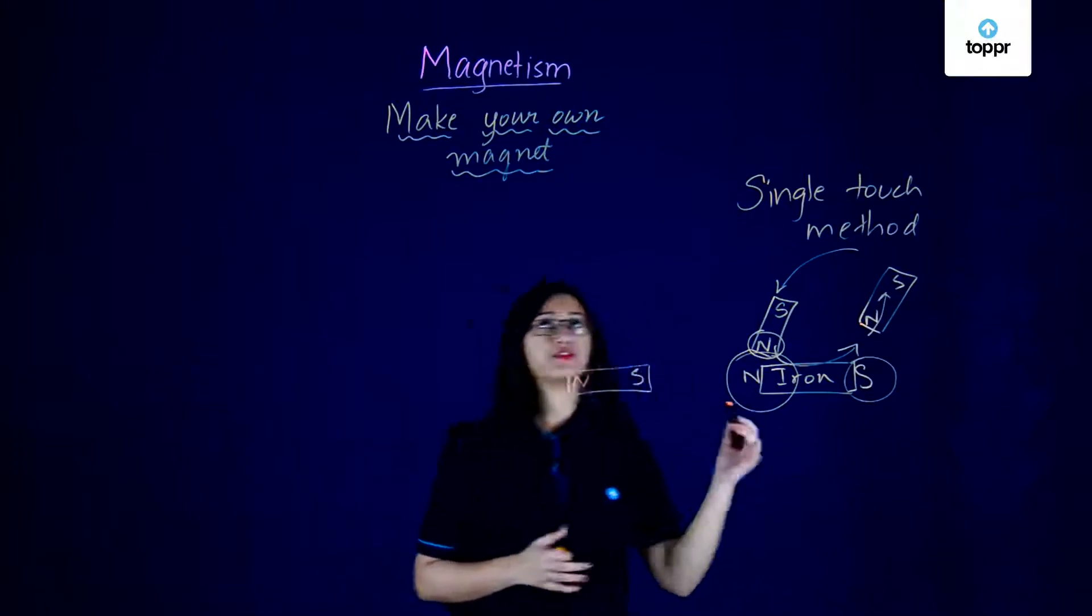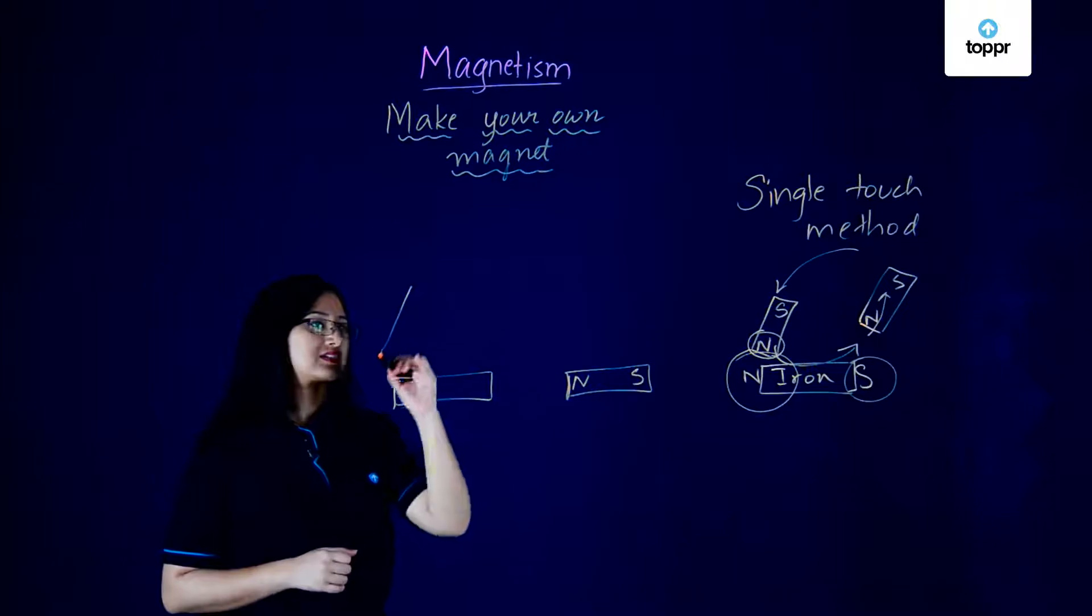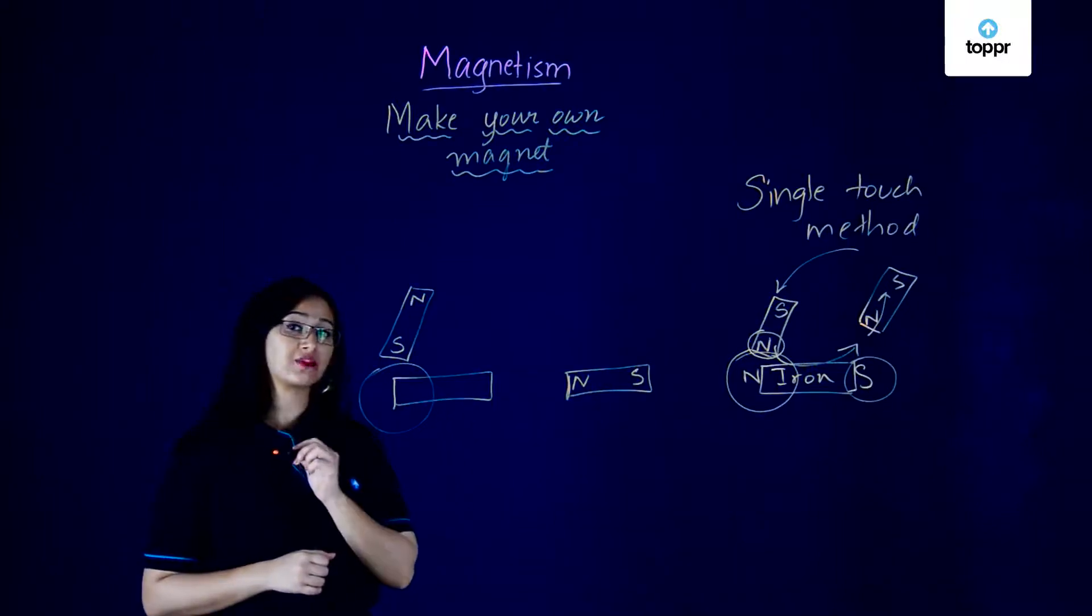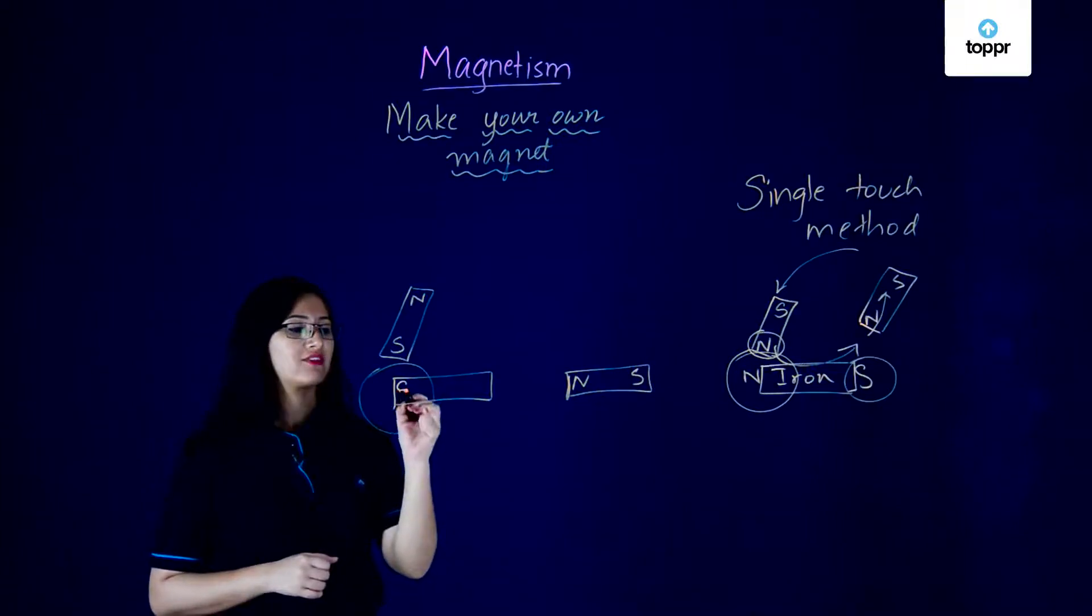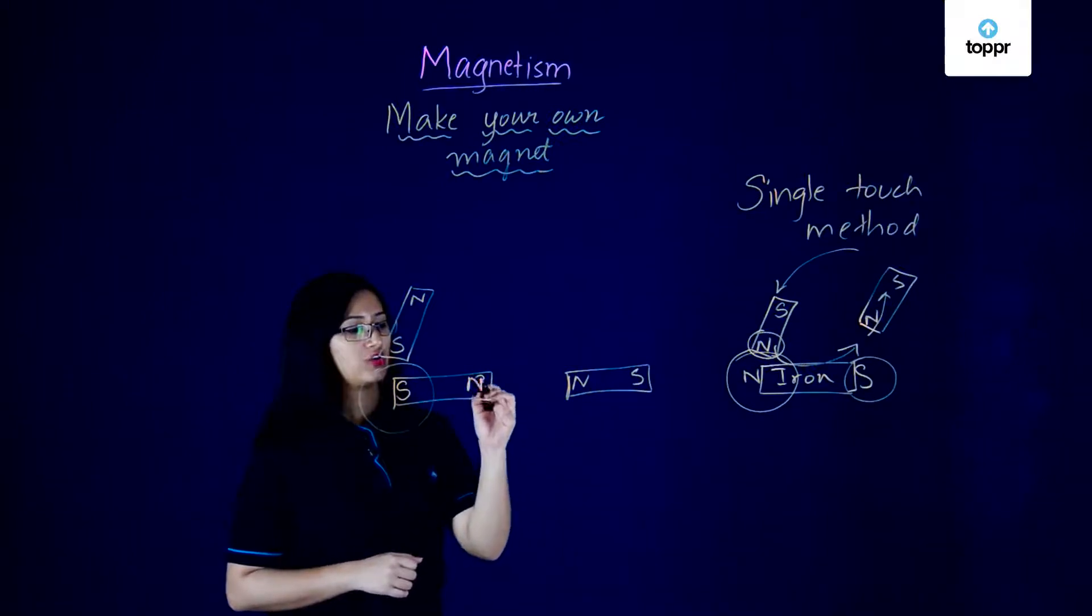Similarly, if you did the same thing but using the south pole of the magnet, can you guess what pole this end of the magnetic material would have? Yes, you're right, it would have a south pole and the opposite end would then get a north pole.